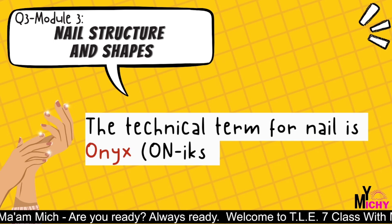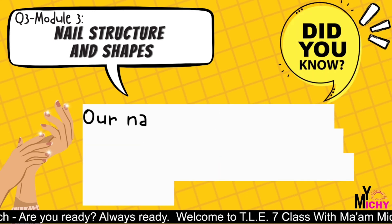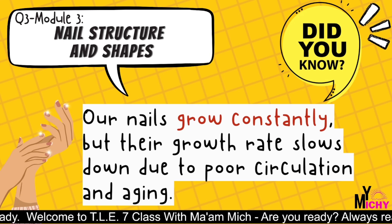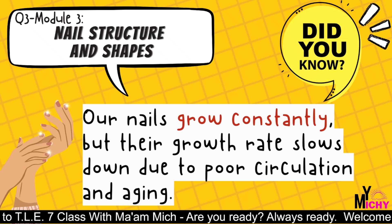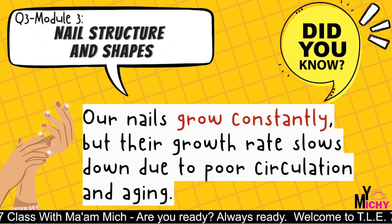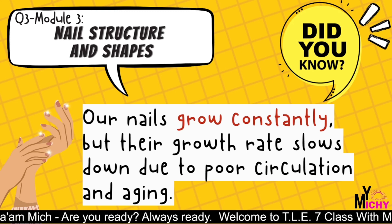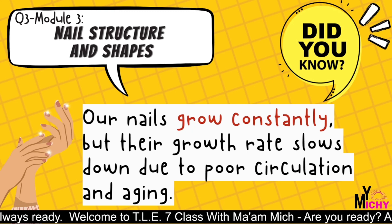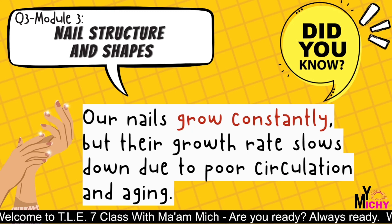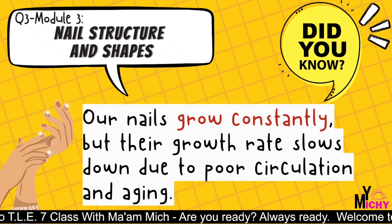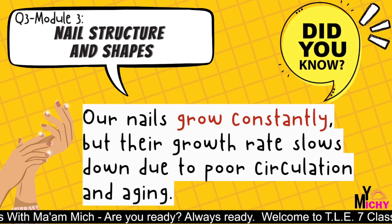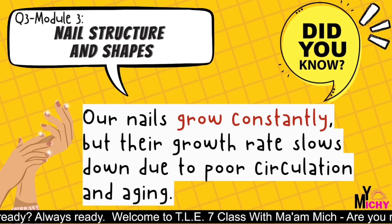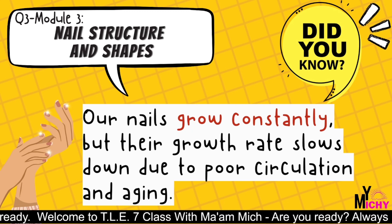The technical term for nail is onyx. Our nails grow constantly, but their growth rate slows down due to poor circulation and aging. Adult fingernails grow at an average rate of 1/8 inch a month, and toenails grow more slowly — it takes a toenail 12 to 18 months to grow from root to tip. Nails replace themselves every four months and grow more quickly in summer than in winter. Our middle finger grows fastest and the thumb grows slowest.